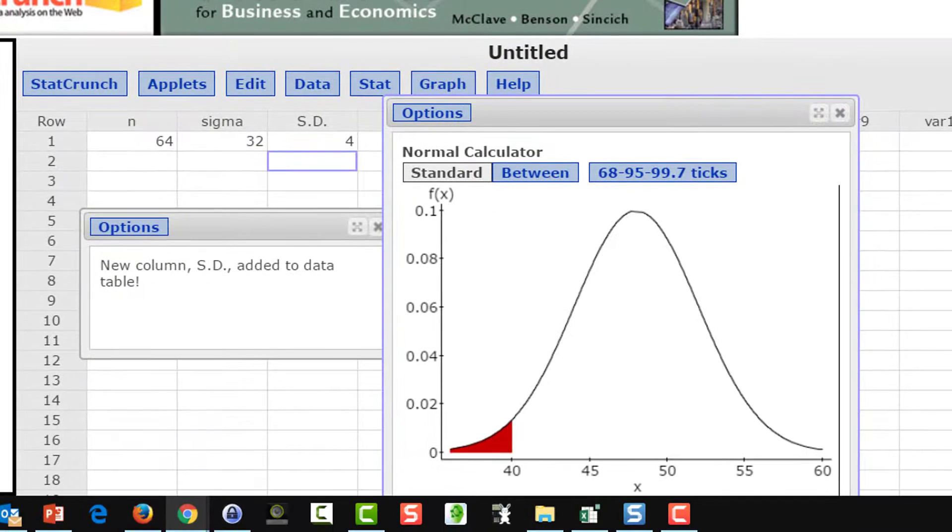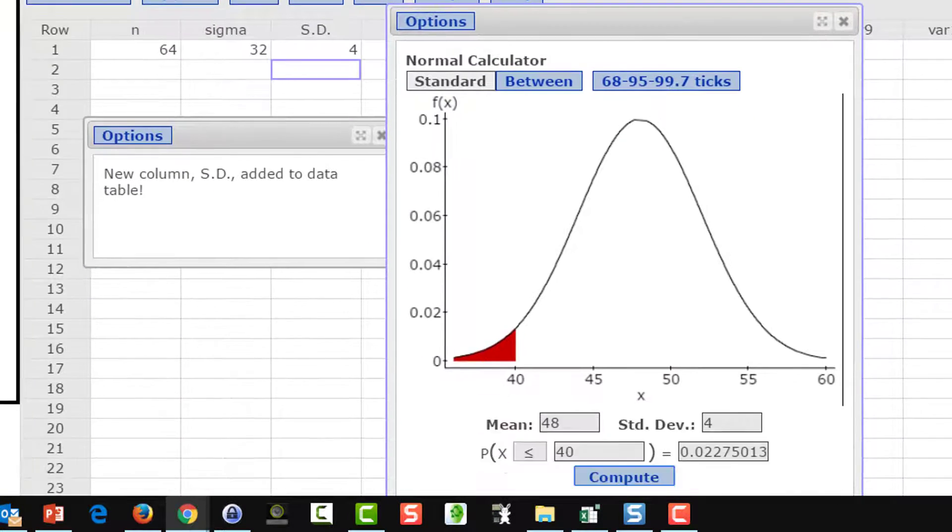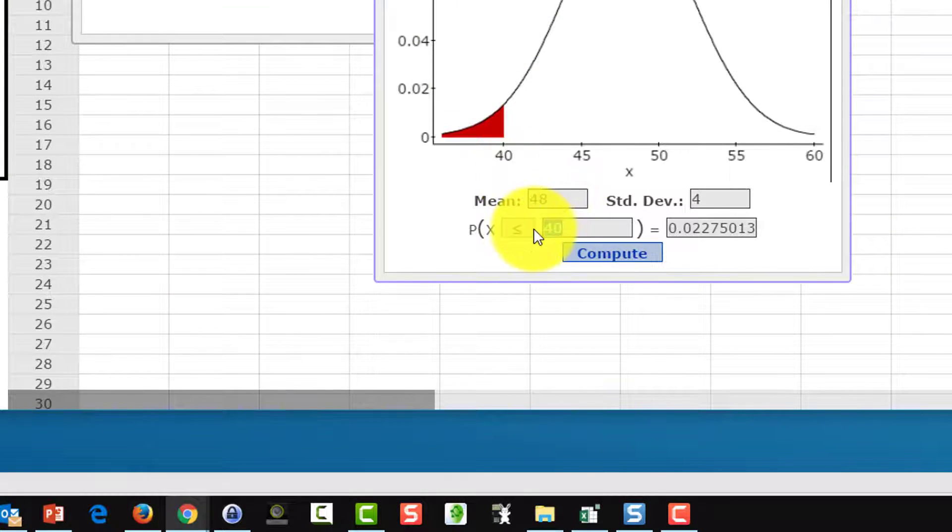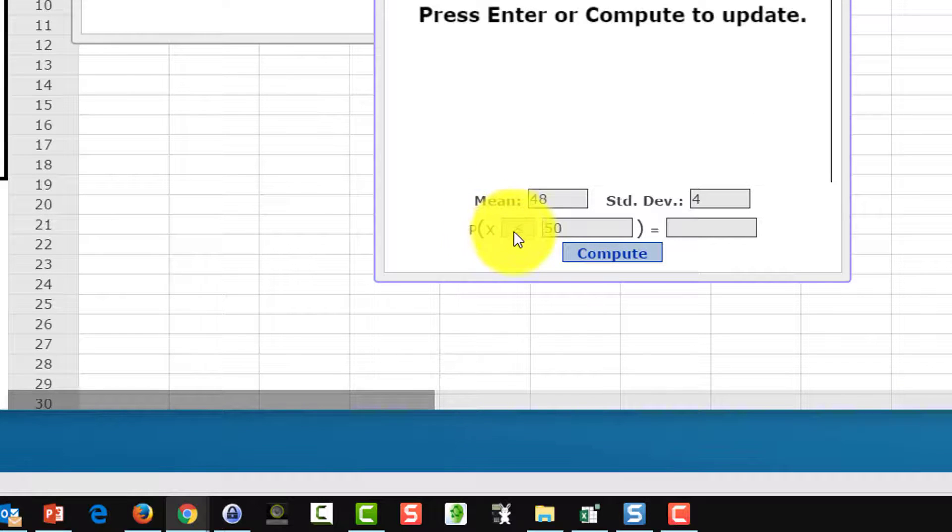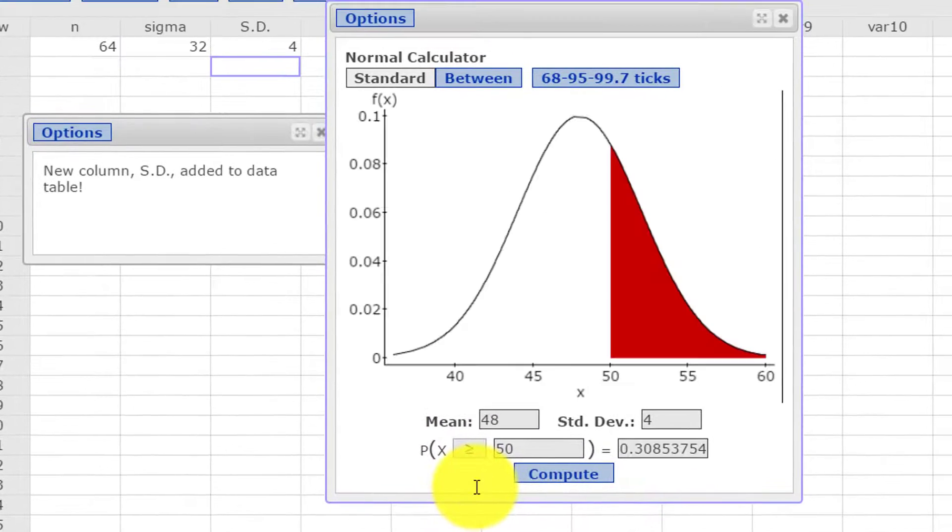The next question: find the probability that x is greater than 50. So we'll put 50 in here. We're going to change the operators to the right-hand side. And again, we've got that neat sketch that shows up. And the probability that our x value is greater than 50 is 0.308, and that's going to round to 0.309.